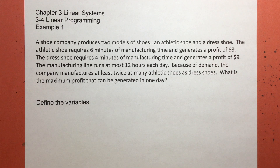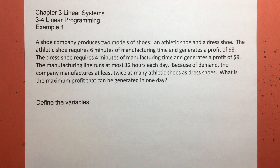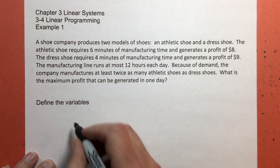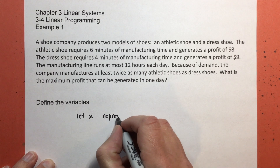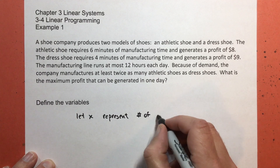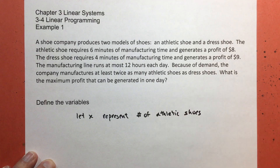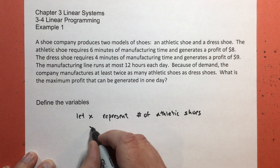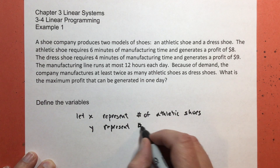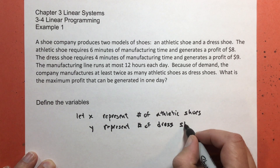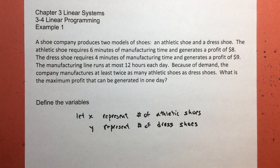So here's what we're going to do. We first have to define the variables. You can use A for athletic shoe and D for dress shoe — that's perfectly okay. However, if we use Desmos to graph this, you're going to have to use X and Y. So let X represent the number of athletic shoes, and let Y represent the number of dress shoes.